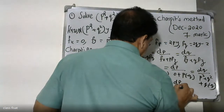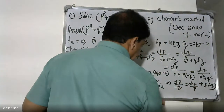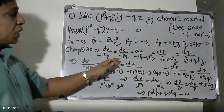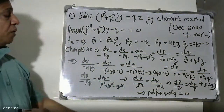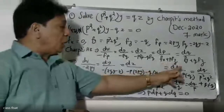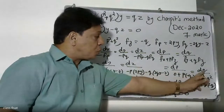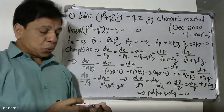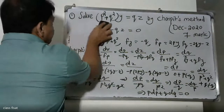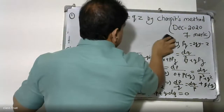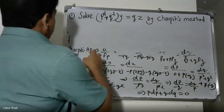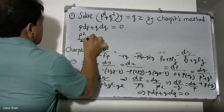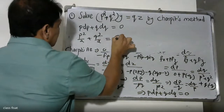Integrating: p dp plus 2 dq equals zero, which gives p dp plus q dq equals zero. Integrating both sides, we get P dp plus Q dq is equal to C1, a constant of integration.